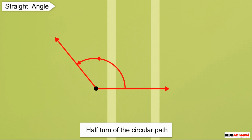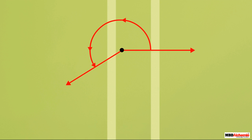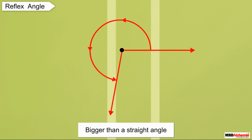Straight Angle: When the revolving arm takes a half turn of the circular path, the angle so formed is called a straight angle. Have you noticed that the two rays are in opposite directions in a straight angle? An angle which is bigger than a straight angle is called a reflex angle.